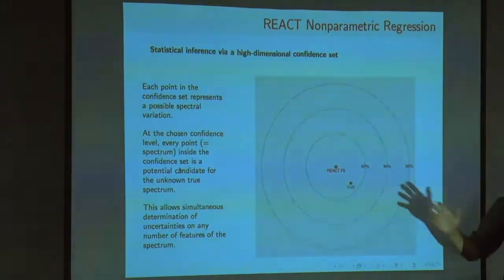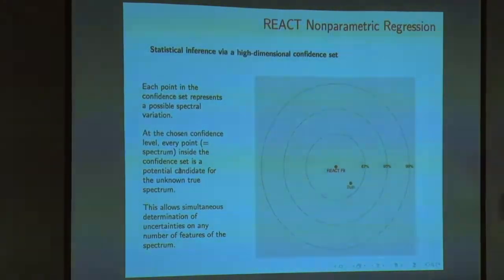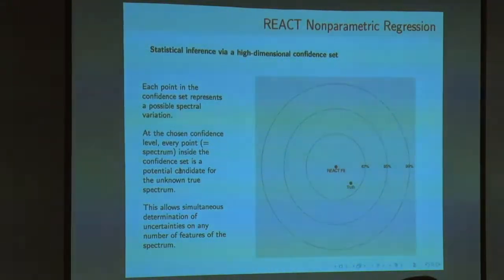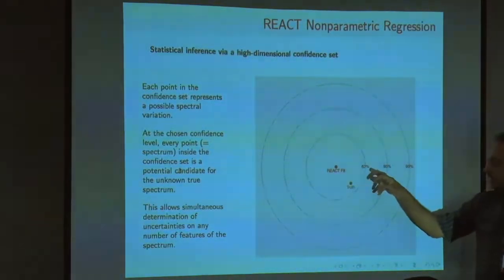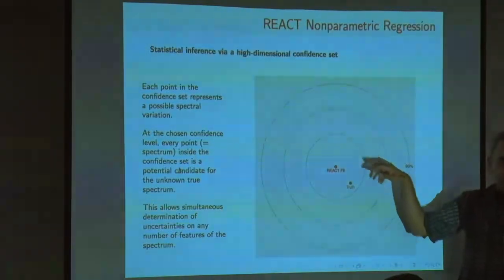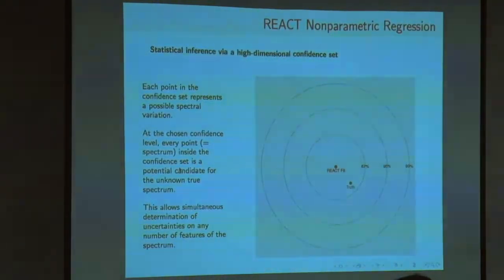This is just a schematic. You are talking about a high dimensional spherical object. Every point in that object represents one particular spectral variation. In principle, if you want to find uncertainties in peak locations, peak heights, such things, then essentially, whichever level of confidence you are working at, scan that confidence set adequately with uniform coverage, and record the variation in the quantity of your interest. Minimum and maximum of those variations will give you a confidence interval or confidence set on that quantity. This is the operating logic of this particular method. This confidence set construct is what really makes it useful in this context.